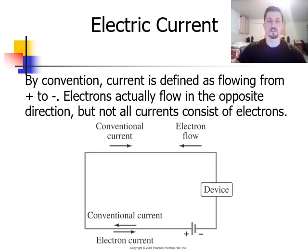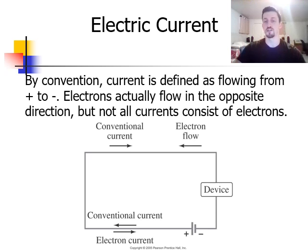By convention, current is defined as flowing from the positive to the negative terminals of the battery through the circuit, but electrons actually flow in the opposite direction. So if you have a current that is due to the motion of electrons, the actual electron flow is going to be in the opposite direction — from the negative terminal to the positive terminal of the battery.